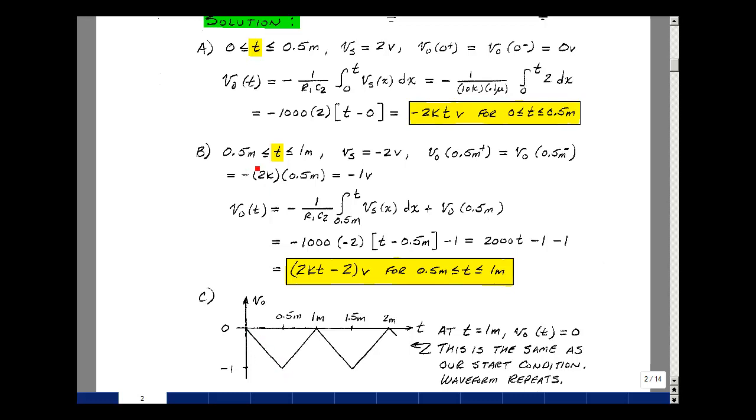We'll next integrate between half a millisecond and 1 millisecond, where the input becomes minus 2 volts. Now V out at T equals 0.5 millisecond minus, we just found to be equal to minus 1 volt. And that's also the same at T equals 0.5 milliseconds plus, because the capacitor voltage cannot change instantaneously, and the output voltage is the negative of the capacitor voltage.